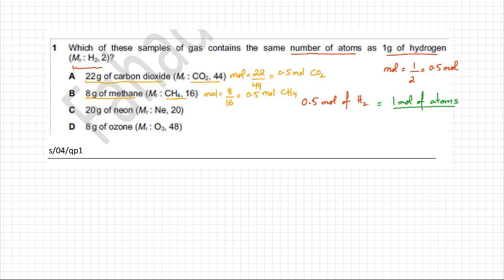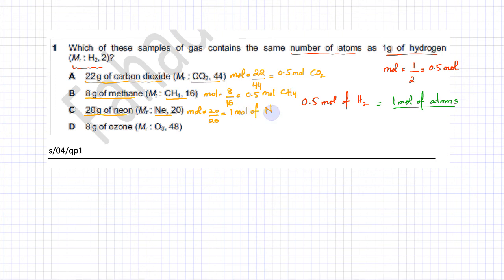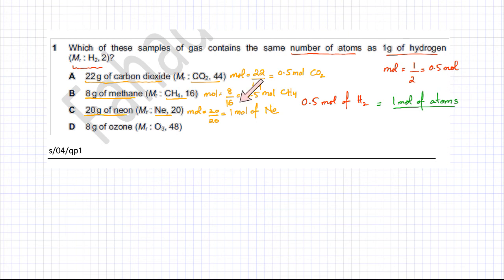Option C: 20 grams of neon. The MR of neon is 20, so moles = 20 divided by 20 = 1 mole of neon. Neon is a noble gas and monoatomic — it exists alone and doesn't bond with anything. So 1 mole of neon equals exactly 1 mole of atoms, which is what we were looking for. Option C is the correct answer.